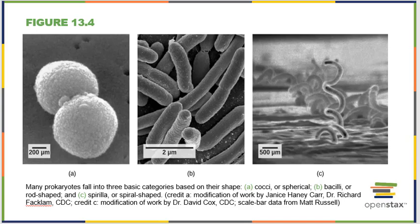When it comes to prokaryotic cells, they share some features with the eukaryotes we've been studying. They all have plasma membranes, they all have cytoplasm, they've all got some sort of genetic material — DNA or RNA — and they all have ribosomes where proteins are made.